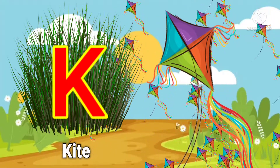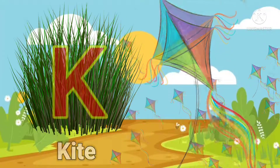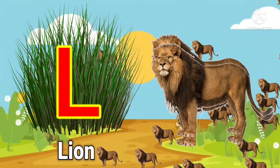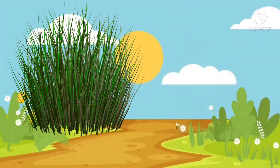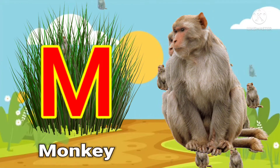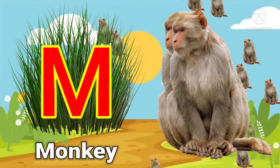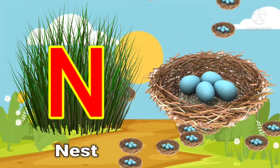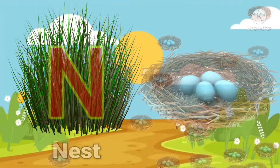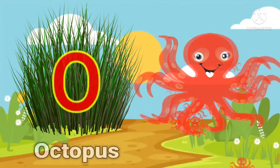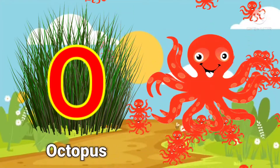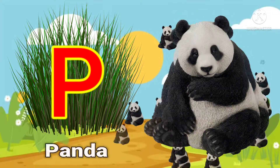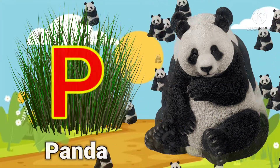K for kite, L for lion, M for monkey, N for nest, O for octopus, P for panda.